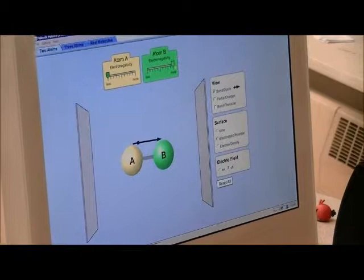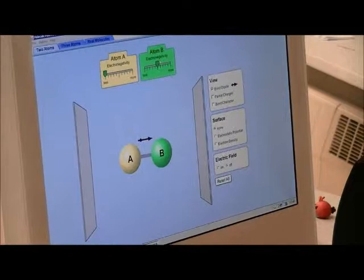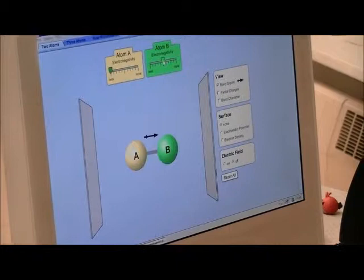You can also, if you take atom B's electronegativity and make it smaller, you can see the arrow shrink because the difference is not as large and, therefore, it's not as big of a pole.